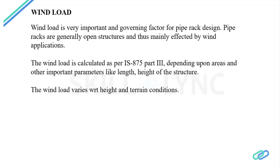You need to be well aware of IS 875 Part 3, because without knowing this code it will be very difficult to apply wind load correctly. As per IS 875, pipe racks are generally open structures, though in some cases they may be closed structures by cladding or other means. There are separate provisions in IS 875 for open and closed structures.